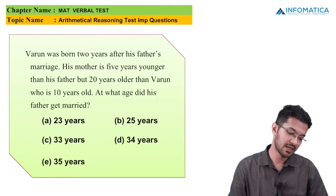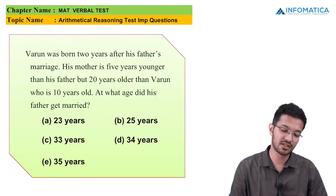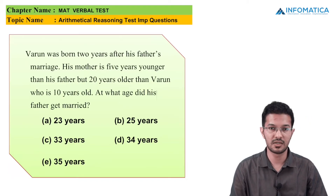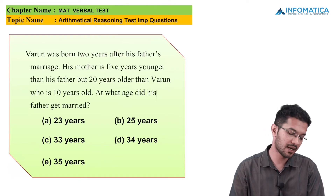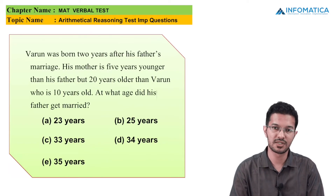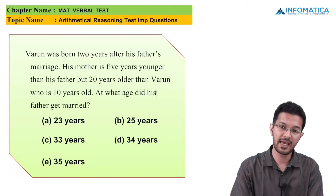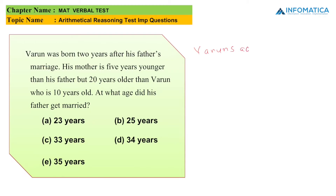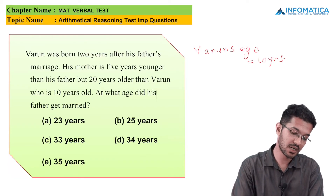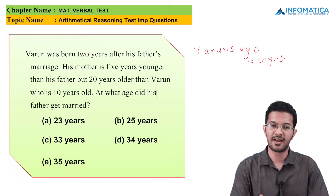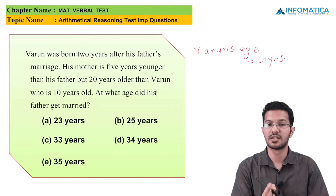The next MCQ: Varun was born 2 years after his father's marriage. His mother is 5 years younger than his father but 20 years older than Varun, who is 10 years old. At what age did his father get married? Varun is 10 years old. His mother is 20 years older than Varun, so his mother's age is 30 years.